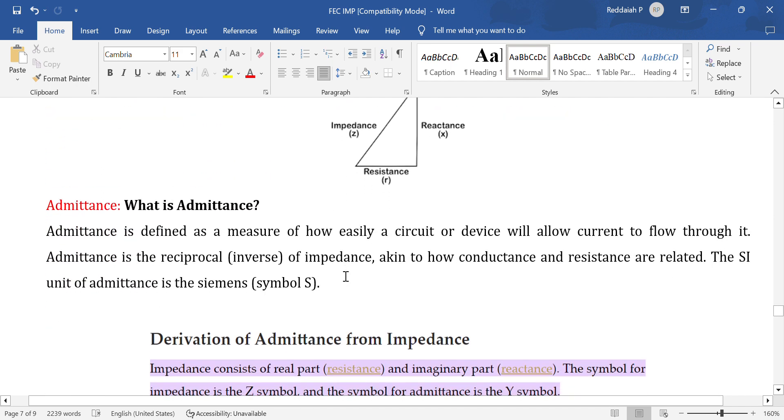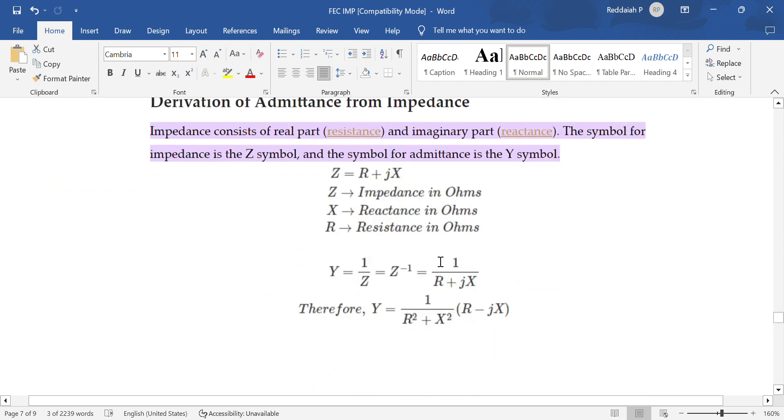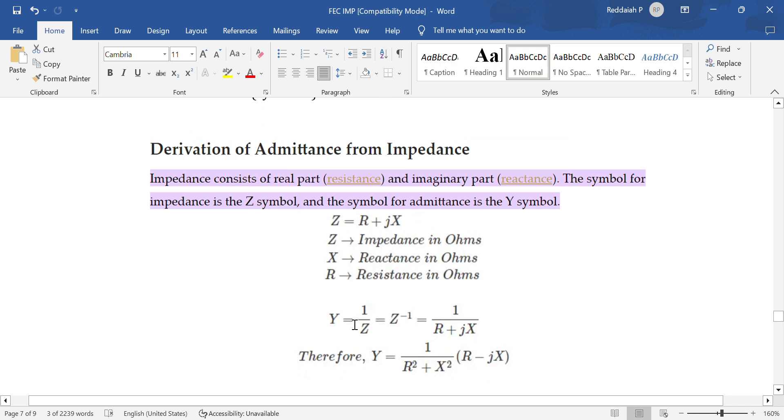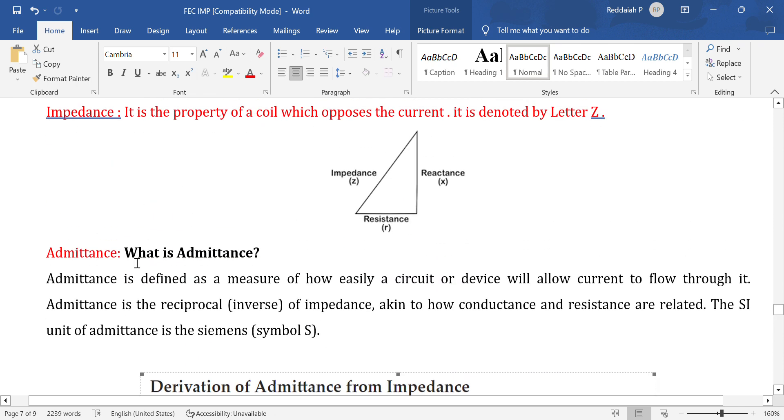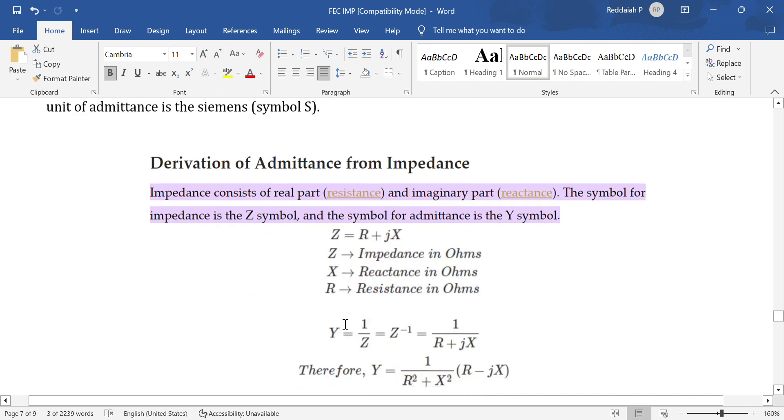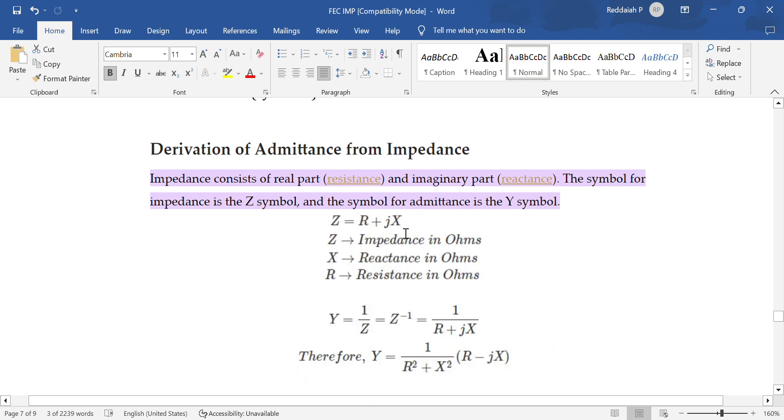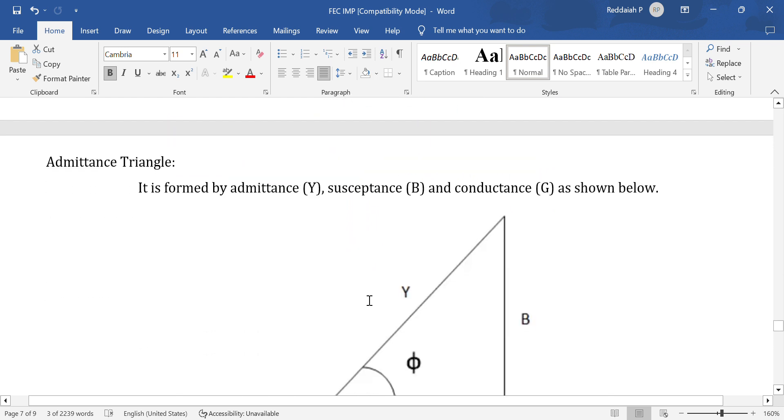What is admittance? Admittance symbol is Y. It is defined as a measure of how easily current can flow. Admittance is opposite to resistance. Simply, admittance indicated by the letter Y equals reciprocal of impedance. Admittance is reciprocal of impedance. Z equals R plus jX, whereas admittance Y equals one by Z, or Z inverse.